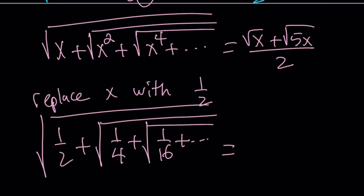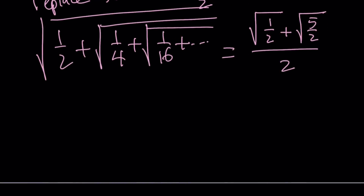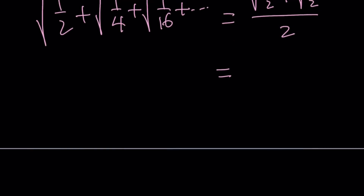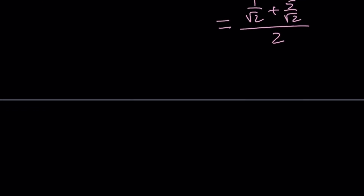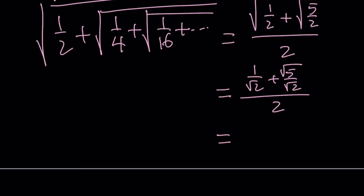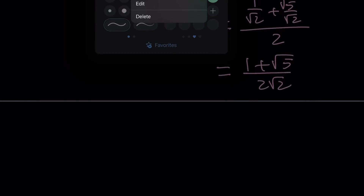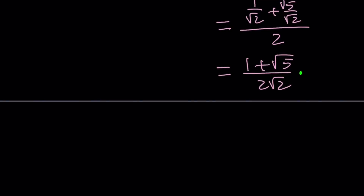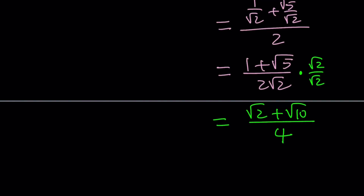On the right-hand side, replacing x with 1/2 gives us the square root of 1/2 plus the square root of 5/2, divided by 2. Simplifying, this is 1 over the square root of 2 plus the square root of 5 over the square root of 2, all over 2 — which becomes 1 plus the square root of 5 divided by 2 times the square root of 2. Multiplying by the conjugate gives us the square root of 2 plus the square root of 10 divided by 4. That is the value our expression converges to.